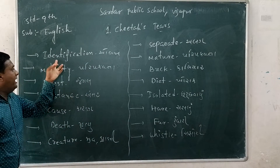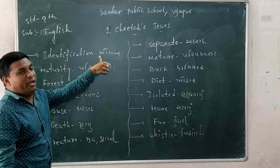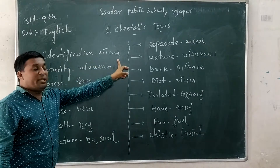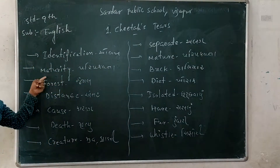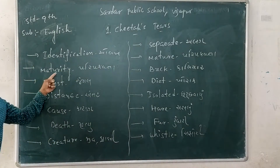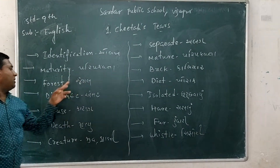Identification — I-D-E-N-T-I-F-I-C-A-T-I-O-N. Identification is older. Maturity — M-A-T-U-I — by Maturity means Kari Mokwata.